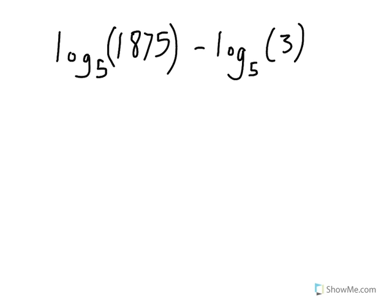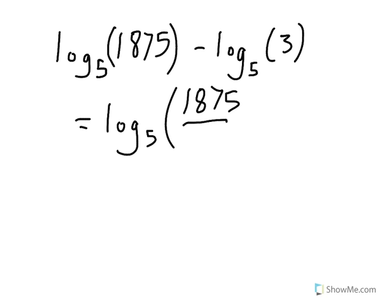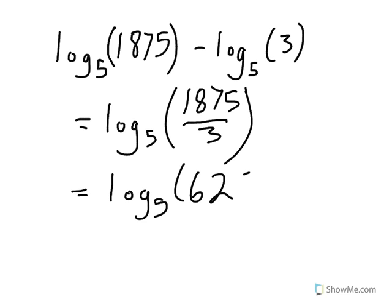In this next example, we have log base 5 of 1,875 minus log base 5 of 3. To condense this logarithm expression, we use the quotient property, which lets us rewrite it as log base 5 of 1,875 divided by 3. That is the condensed form.